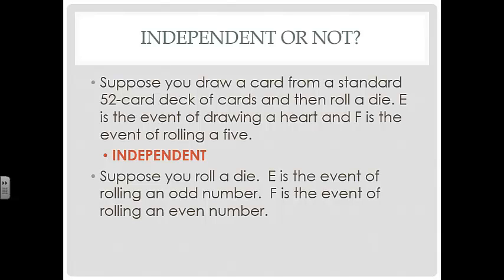Suppose you roll a die. E is the event of rolling an odd number. F is the event of rolling an even number. That's dependent because once you roll the die, it's either odd or it's even, and now the probability of the other event is 0. So it has affected the probability of the events. And these are also disjoint or mutually exclusive. You can't roll an odd and roll an even at the same time.